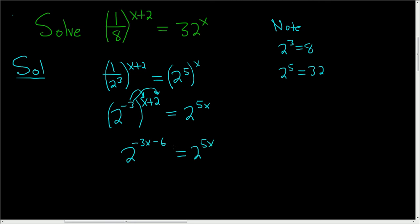And now we are in a position where we can drop the bases. So negative 3x minus 6 is equal to 5x.